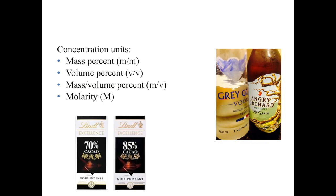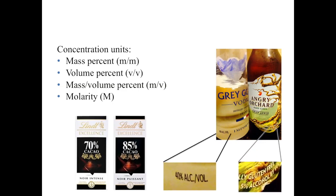For example, if I have a solid mixed within a solid and I want to know what is the percent of the solute, I might want to use mass percentage. Or if I have a mixture of liquids, I might want to use percentage concentration in volume instead. And then in some fields, it is more convenient to write the ratio between the mass of a solute versus the volume of the solution — we can see that as mass per volume percentage.